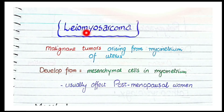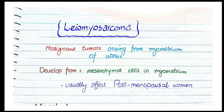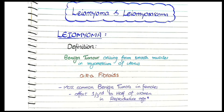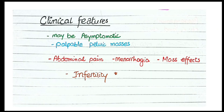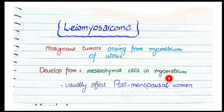Now let's discuss leiomyosarcomas. The word sarcoma means malignant tumor, so leiomyosarcomas are malignant tumors arising from the myometrium of the uterus, developing from mesenchymal cells in the myometrium. These mesenchymal cells differentiate into abnormal cells called leiomyosarcomas, and they are usually less differentiated compared to their benign counterpart, leiomyomas. An important point is that leiomyosarcomas usually affect postmenopausal women, in contrast to leiomyomas which develop in women of reproductive age due to estrogen dependence.